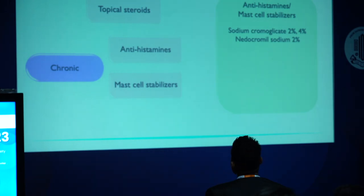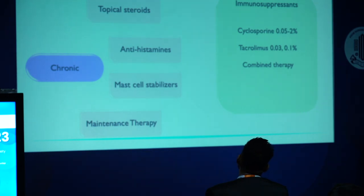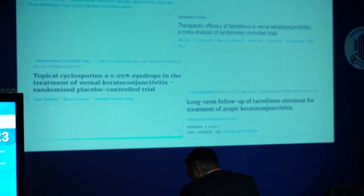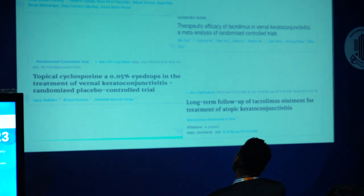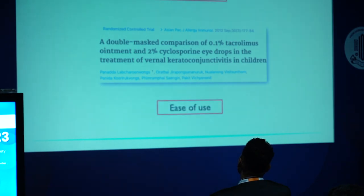Just mast cell stabilizers in combination with the corticosteroid may suffice. Because patients have chronic disease, they require maintenance therapy, and here topical calcineurin inhibitors are the drugs of choice — they also have a delayed onset of action, starting somewhere between six to eight weeks. So it is imperative to give patients topical steroids during the upcoming phase. Head-on trials comparing cyclosporine and tacrolimus have found similar efficacy. But tacrolimus is an ointment with once-nightly dosage and overall less discomfort, so it is easier to use in children.